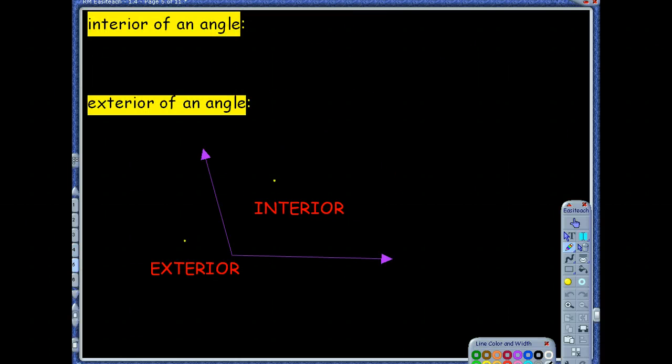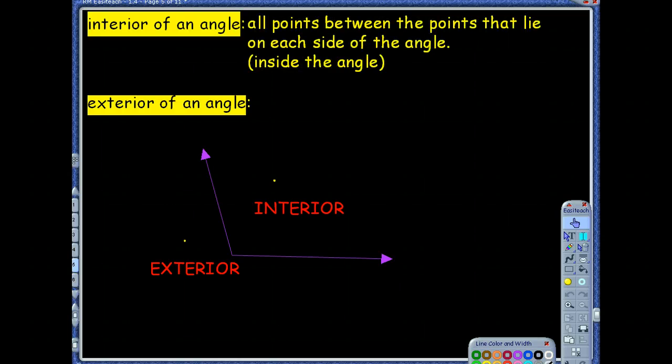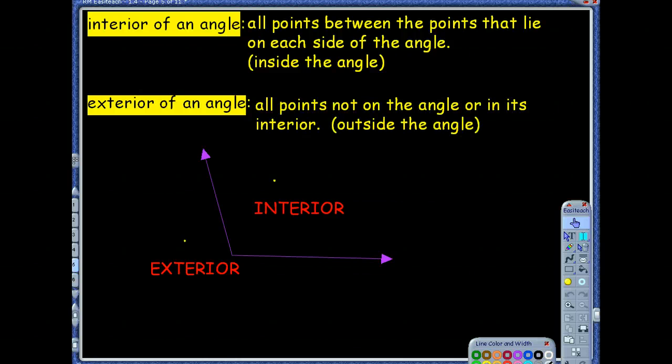Now, we have a couple different types of angles or points we could talk about within an angle. We can talk about the interior of an angle, which is any point that lies inside of that angle. We also have the exterior angles, which are points that are outside of the angle. Notice that interior and exterior points are not actually on the angle itself.